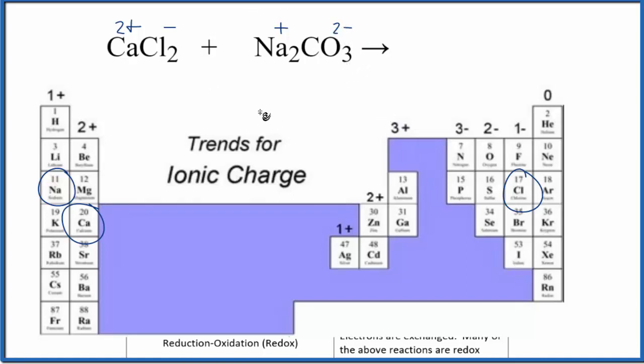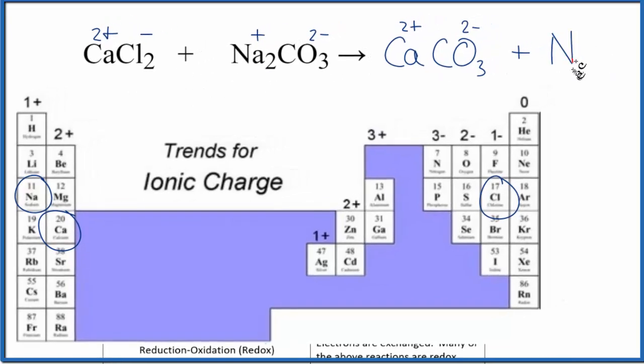So we have our charges and now we can figure out what might happen. The calcium here could switch places with the sodium and now it's going to be bonded to the CO3, calcium carbonate. We have 2+ and 2-, so that's fine. We can just leave it written as it is. The sodium switches place with the calcium, so we have NaCl. The sodium was positive and the chlorine was negative, so those charges are fine too.